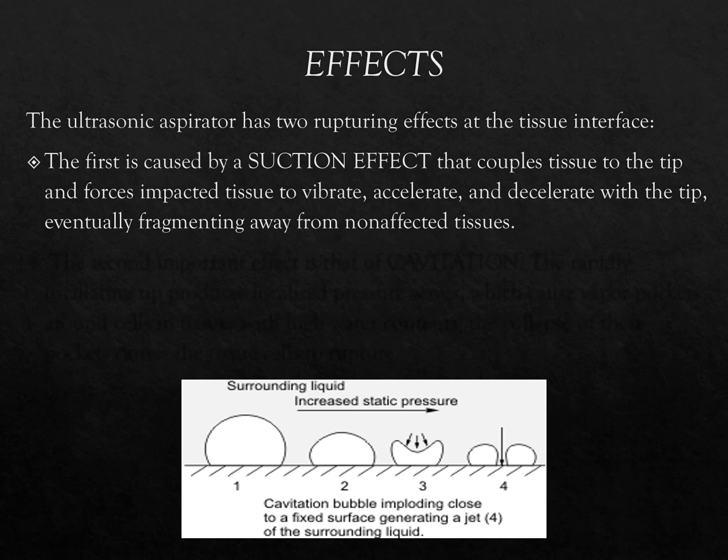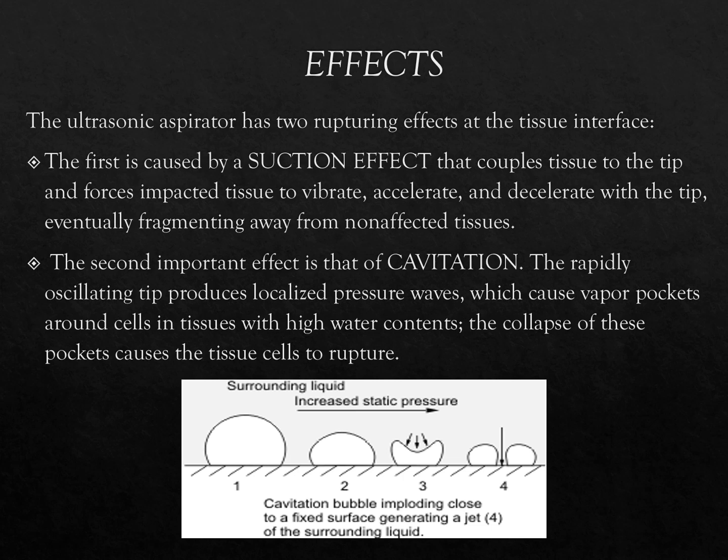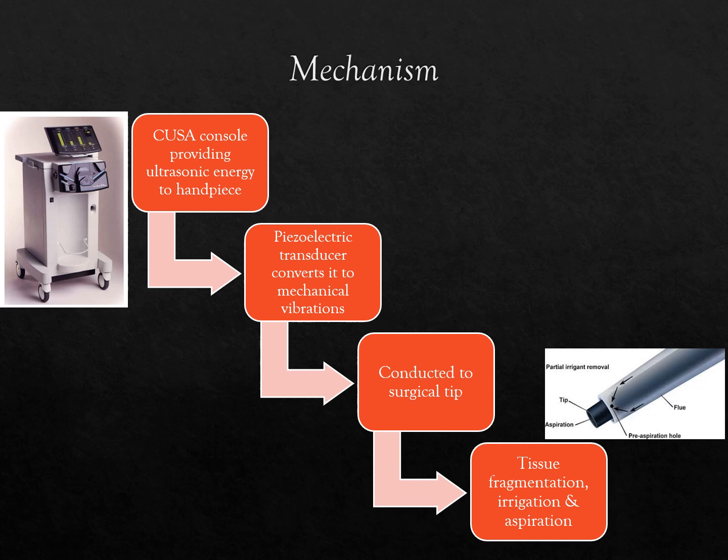Coming to the effects on the tissue interface, there are two main effects. The first is the suction effect, which couples tissue to the tip and forces the impacted tissue to vibrate, accelerate, and decelerate with the tip, eventually fragmenting it away from non-affected tissues. The second important effect is cavitation: the rapidly oscillating tip produces localized pressure waves, creating vapor pockets around cells in tissues with high water content, and the collapse of these pockets causes the tissue to rupture.